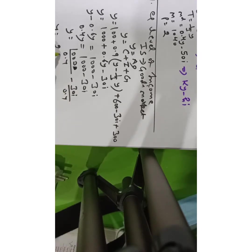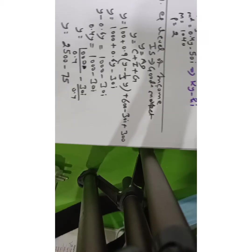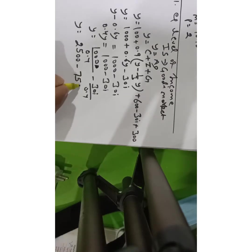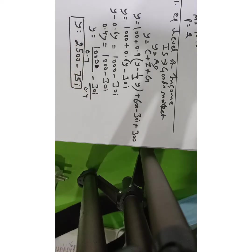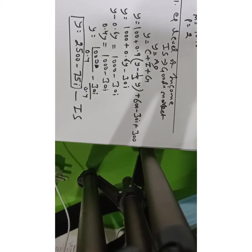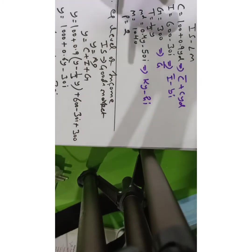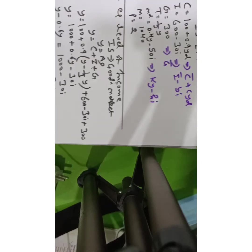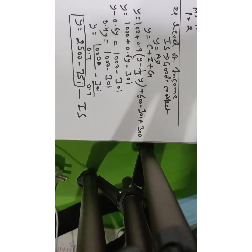In terms of Y, what we get is: Y equals 2500 minus 75i. This is the IS equation. To get the equilibrium level of income, we now need to solve for LM and then compare both IS and LM together. I have used the information for C, I, and G and solved in terms of Y.